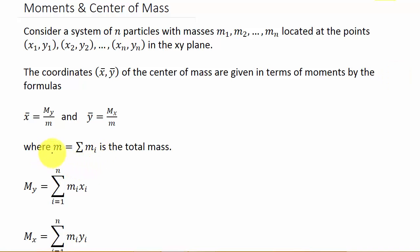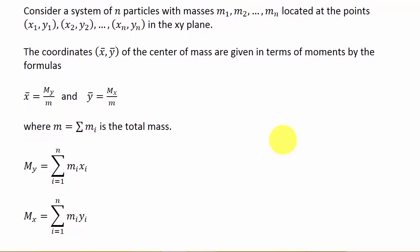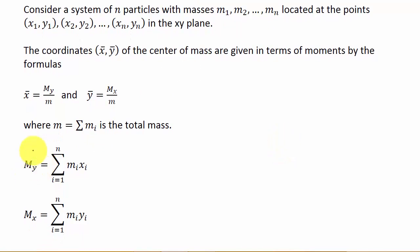Where m is the sum of these masses, the total mass. The Mᵧ in the formula is the moment of the system about the y-axis, and Mₓ is the moment of the system about the x-axis.